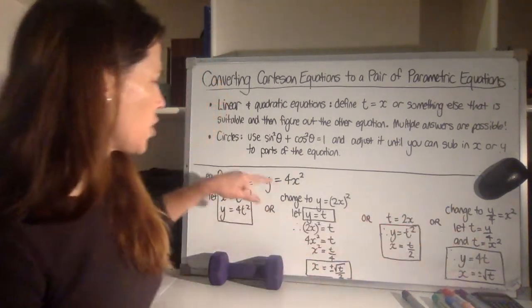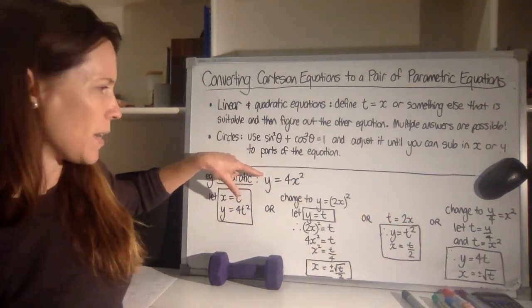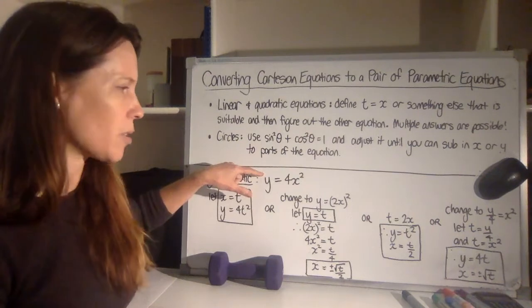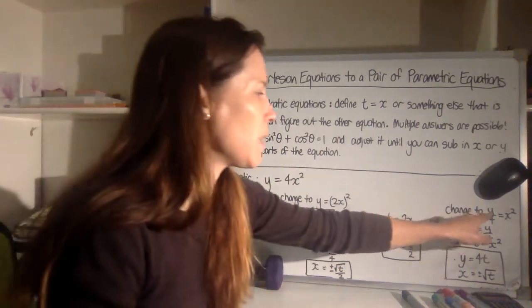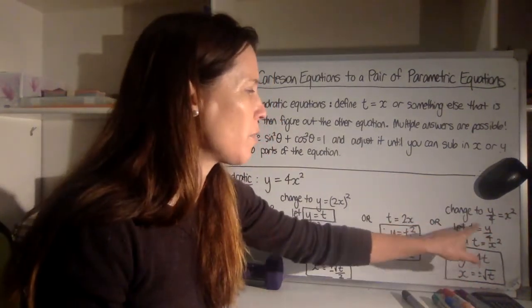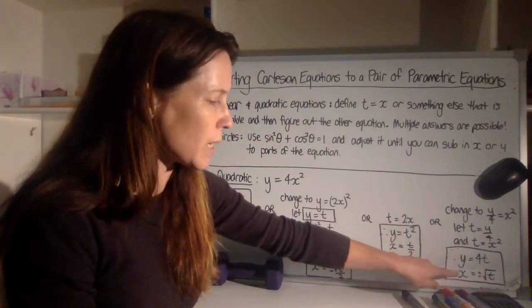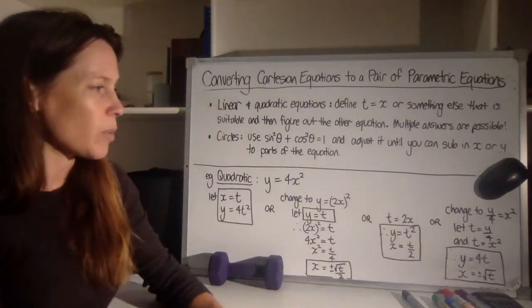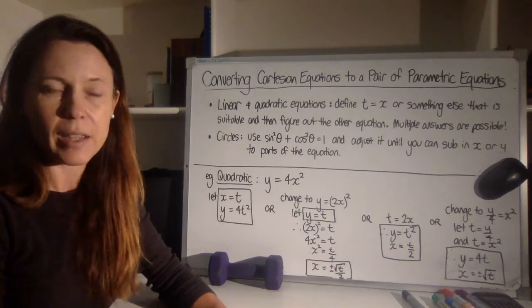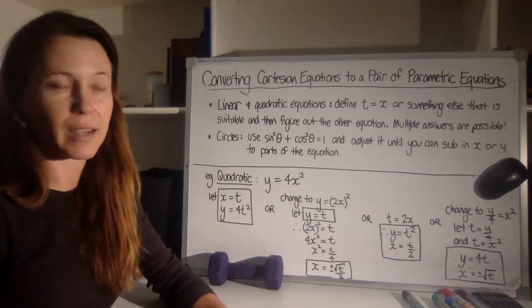And the last one over here, I've changed the original equation to y over 4 equals x squared. And then I've let t be both sides. So t is y over 4 and t is x squared. And then simplifying, y must be 4t. And x must be equal to the plus or minus square root of t. So lots of ways to do the exact same thing.